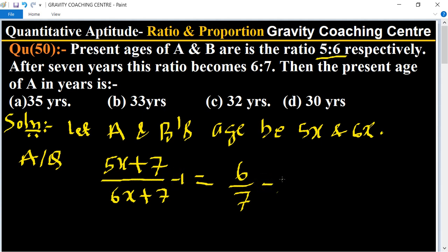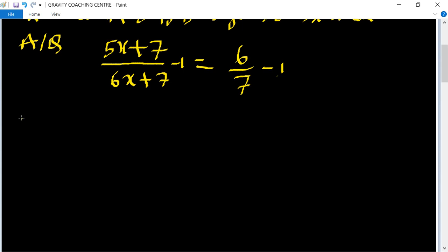This implies that 5x plus 7 minus 6x minus 7 upon 6x plus 7 equals 6 minus 7 upon 7.